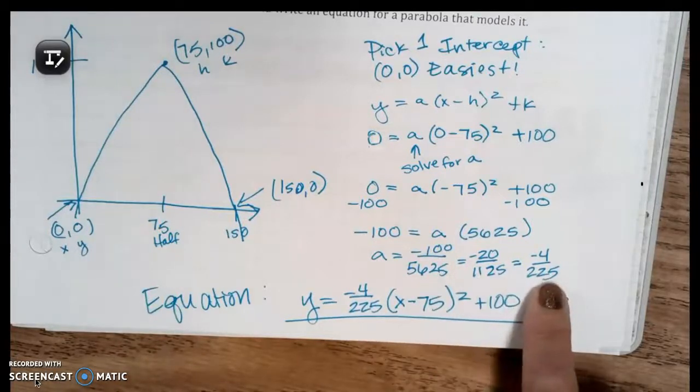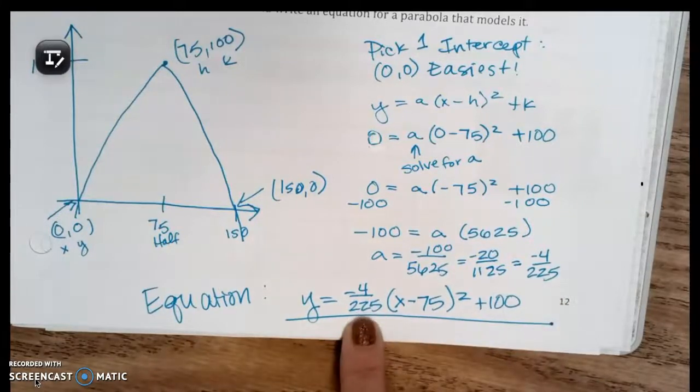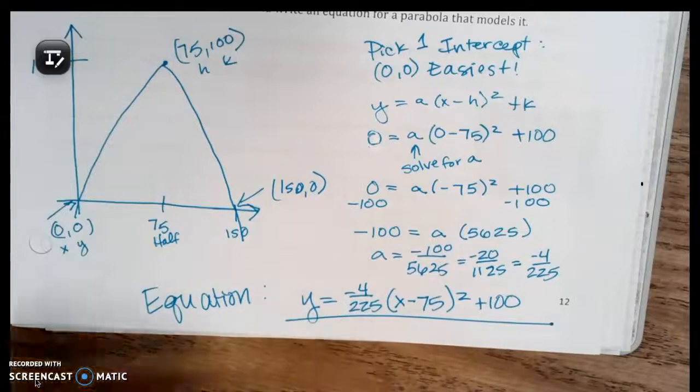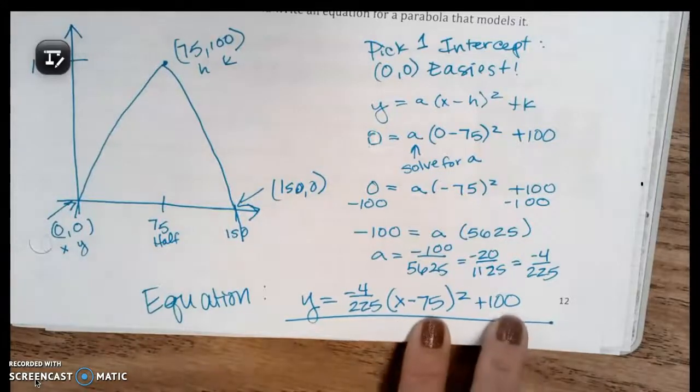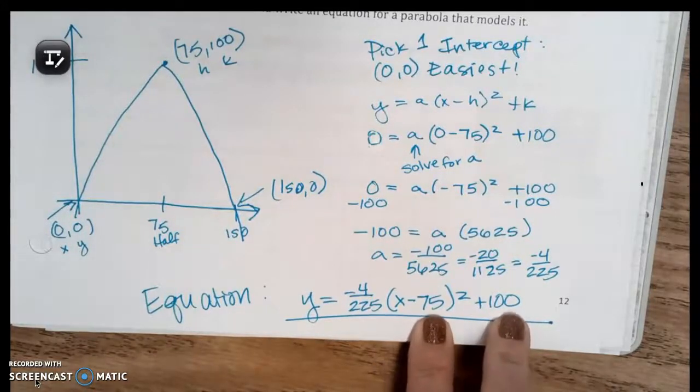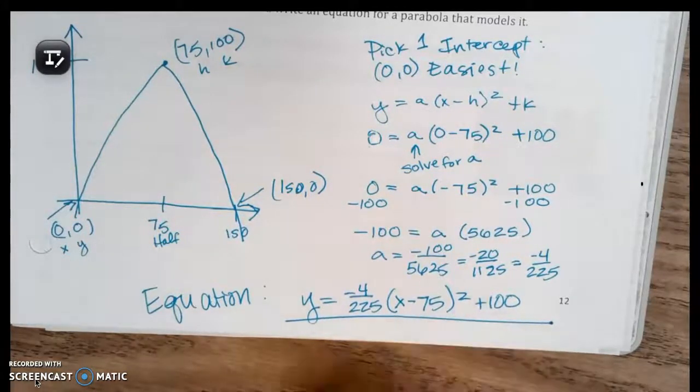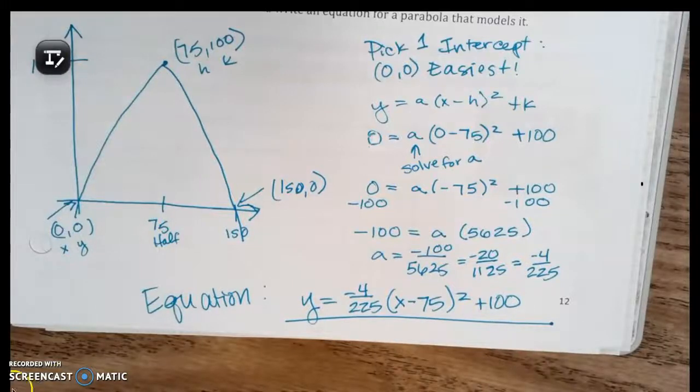You can put it into the equation just like that, or you can reduce it like I did. I reduced it all the way down to negative 4 over 225. Plugged that into the a. Does it make sense that it's negative? Yes, because it's opening down, right? Does it make sense that it's a fraction? Yes, because it's going to compress it. And then we plug in our vertex, our (75,100), and we have our equation.